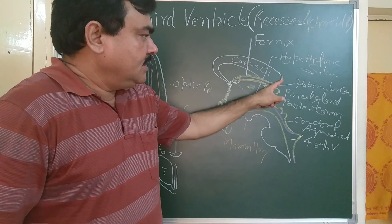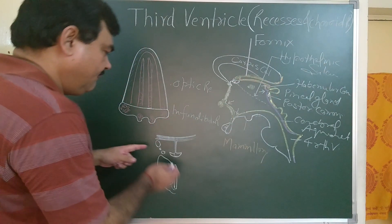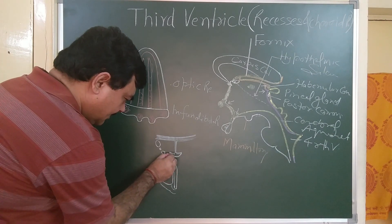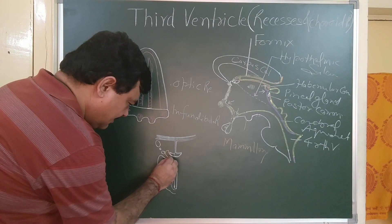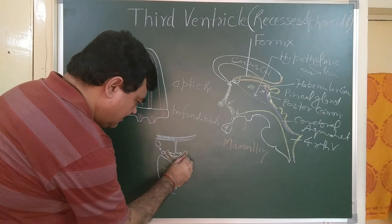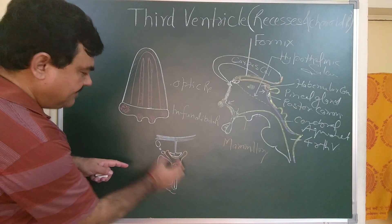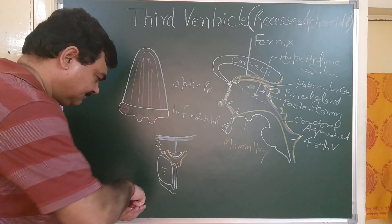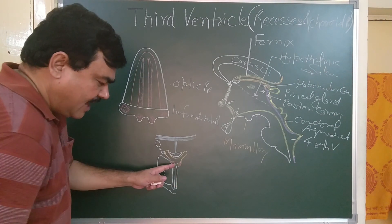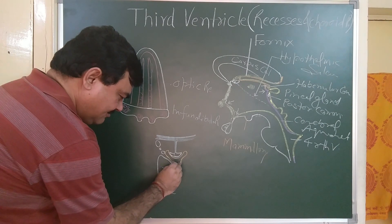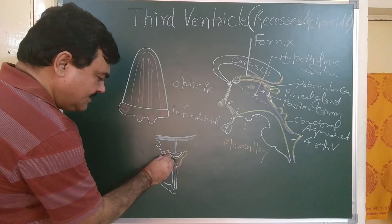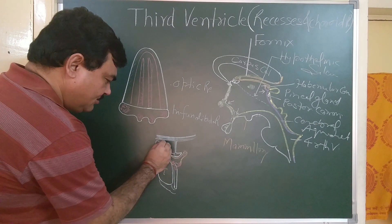Through the choroid fissure, the fold of pia mater invaginates to form the tela choroidea. The choroid plexus formed here produces CSF, which goes into the third ventricle.